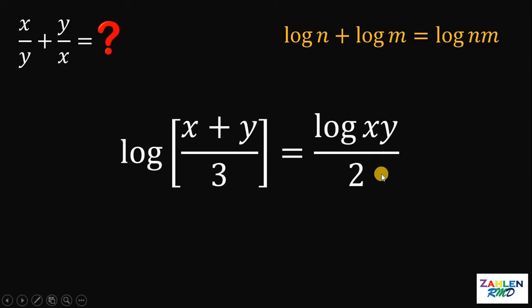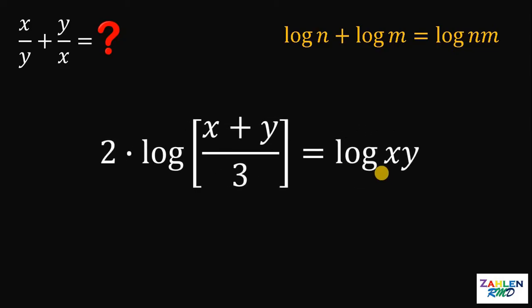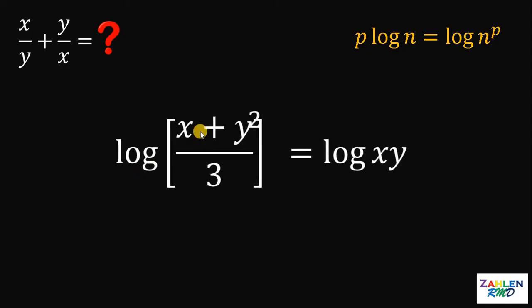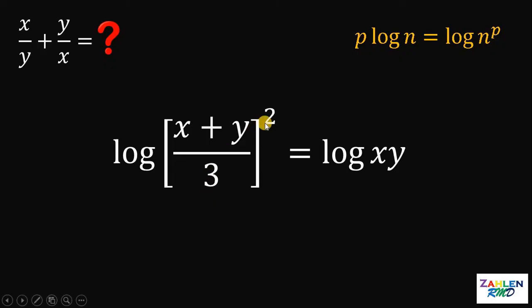Now, let's multiply both sides by 2. And let's use another property of logarithm. If we have p times logarithm of n, it is equivalent to logarithm of n raised to the power of p. Therefore, the left-hand side of this equation can be written as logarithm of x plus y over 3 raised to 2.